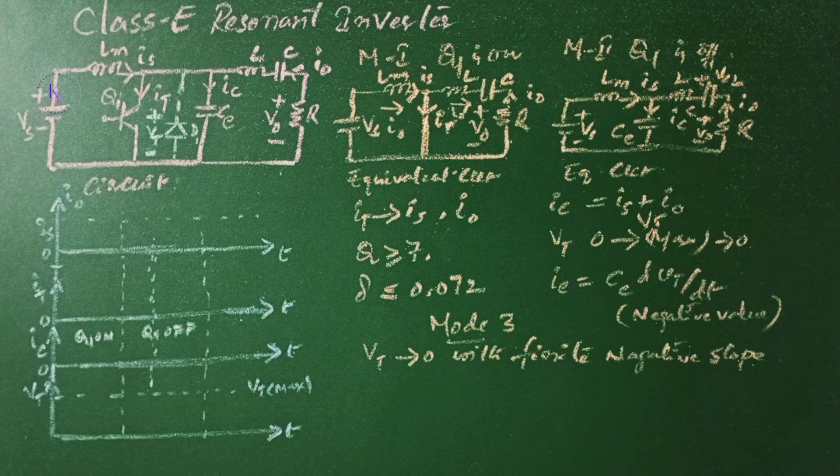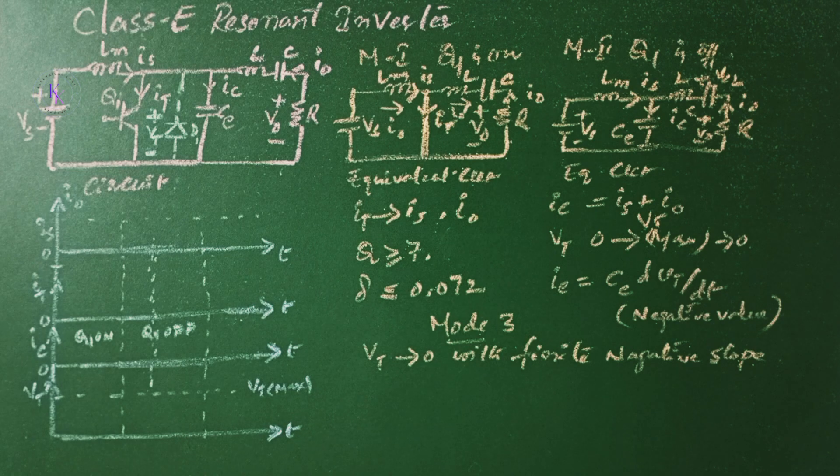However, if the circuit parameters are such that the switch voltage falls to 0 with a zero slope, there will be no need for a diode and this mode would not exist.